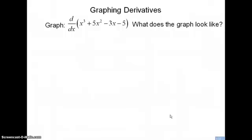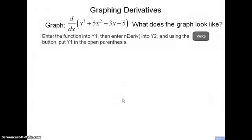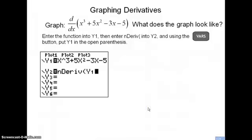Your calculator can also graph derivatives without you analytically finding the derivative function first. You can tell your calculator the original function — for instance, here we want to graph the derivative of x cubed plus 5x squared minus 3x minus 5. Enter this original function into Y1, then move your cursor to Y2, hit the Math button, and choose number 8. This enters nDeriv into Y2 with an open parenthesis — you don't have to go back to the home screen.